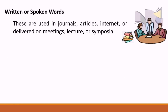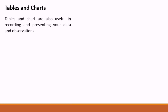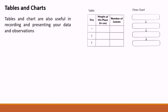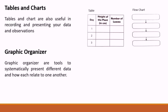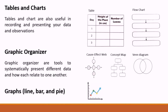Communicating may be in written or spoken words. These are used in journals, articles, internet, or delivered in meetings, lectures, or symposia. It can also be drawings or illustrations. Illustrations can help you understand and describe your observations more. Communication may also be presented in tables and charts, which are useful in recording and presenting your data and observations. It can also be in a graphic organizer — tools to systematically present different data on how each relates to one another. It can also be in graphs, like line, bar, and pie graphs.